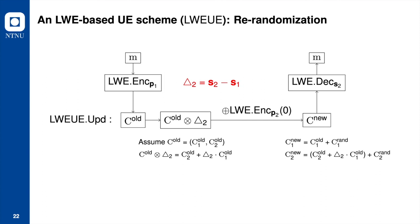To update a ciphertext, LWE-UE uses a re-randomization approach similar to the idea of RISE. The update algorithm uses the update token to update the ciphertext from an old one to a new one. More precisely, the update algorithm first moves ciphertext from the old key to the new key. This newly created mid-term ciphertext is a valid ciphertext under the new epoch key. However, the mid-term ciphertext may not be independent from the old ciphertext, which is not sufficient to provide the desired UE security. That is why re-randomization is needed.